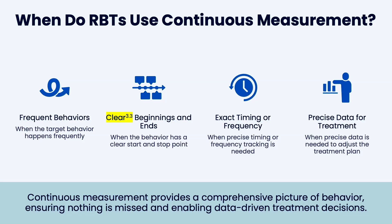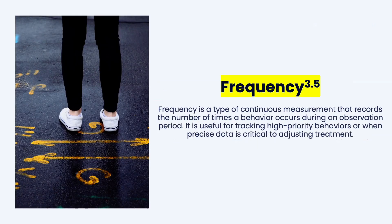We're going to talk about a couple different types of continuous measurement. The first type is frequency — this is super easy. It is simply a tally count of behavior: you mark down when the behavior is occurring and count the number of times it occurs during the observation period. You can break your observation period into beginning, middle, and end for more detail, or just use a single tally count within one 20-minute observation period.